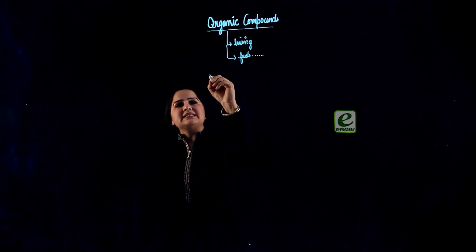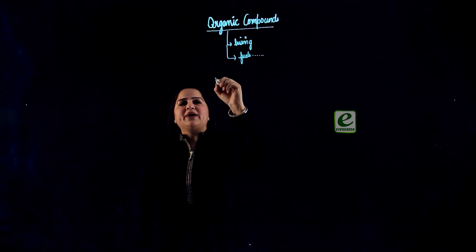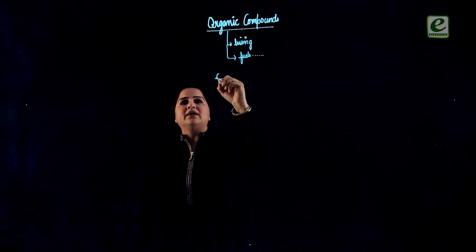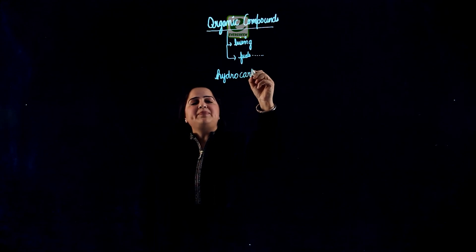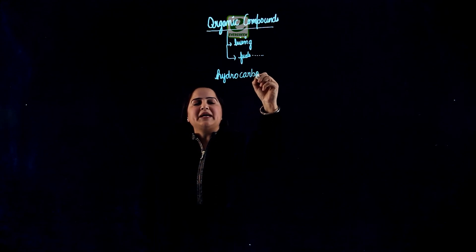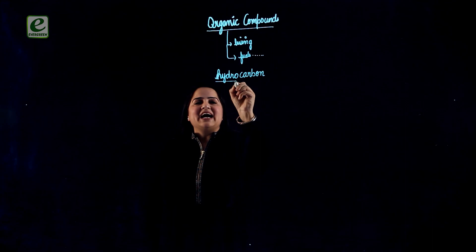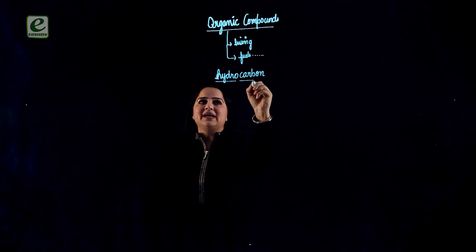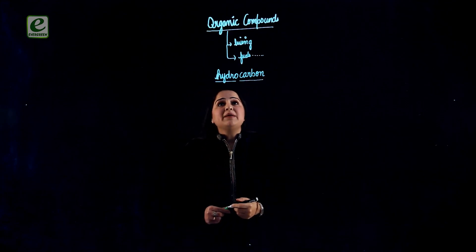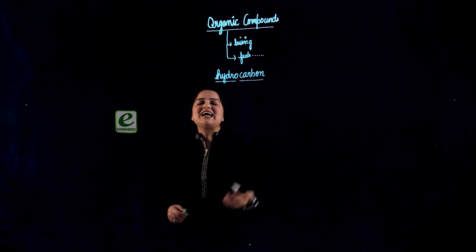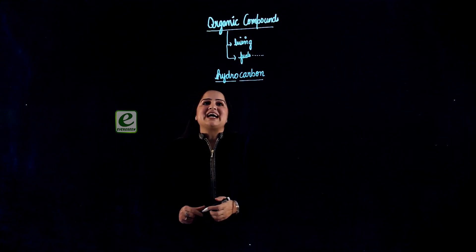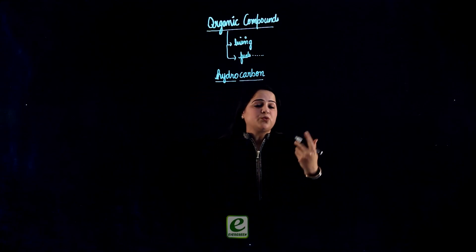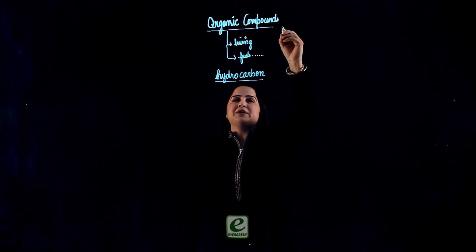The basic structure of organic compounds comes with the word hydrocarbon. Hydrocarbons are the simplest of organic compounds which contain hydrogen and carbon. But before we start with organic compounds, let's just understand how these organic compounds were once synthesized in laboratory.